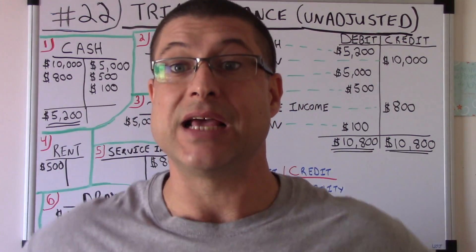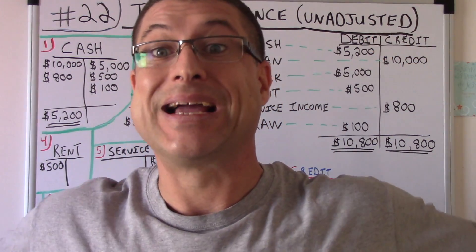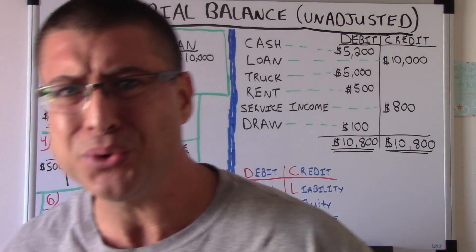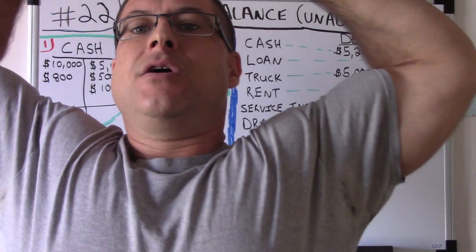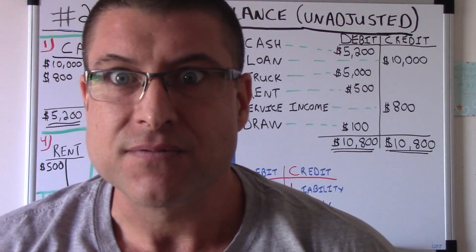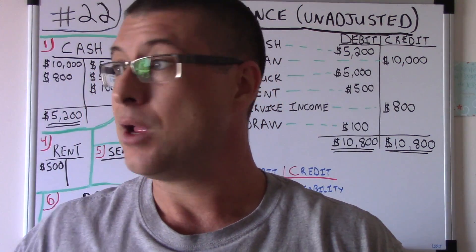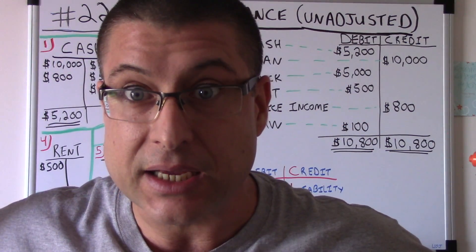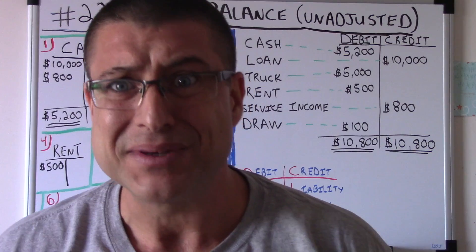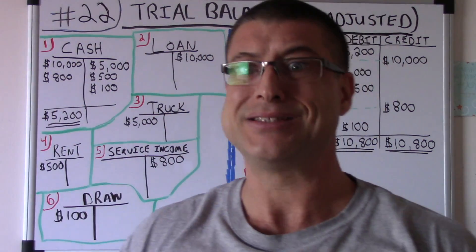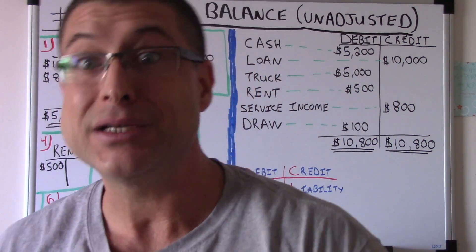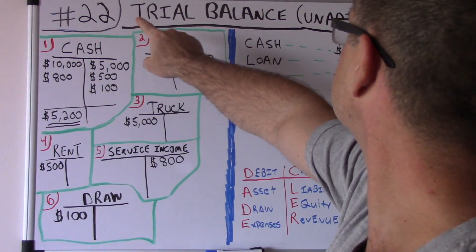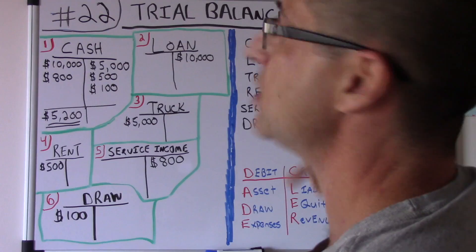What's up, it is CPA Strength back again — Accounting for Beginners number 22. I'm the strongest CPA in Florida. I already know the neighbors are like 'who is this kid and who gave him a CPA license?' But guess what — I passed the test. Anyway, we're going to do number 22: trial balance.